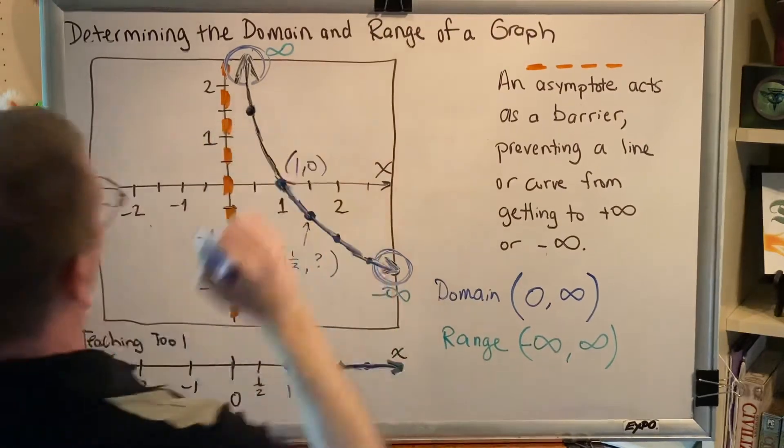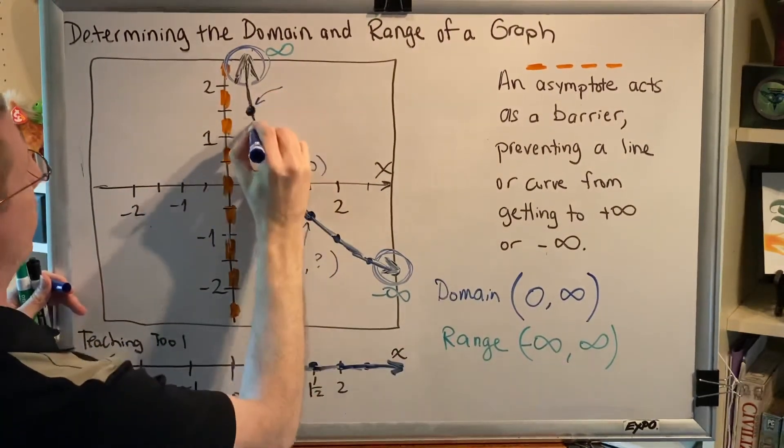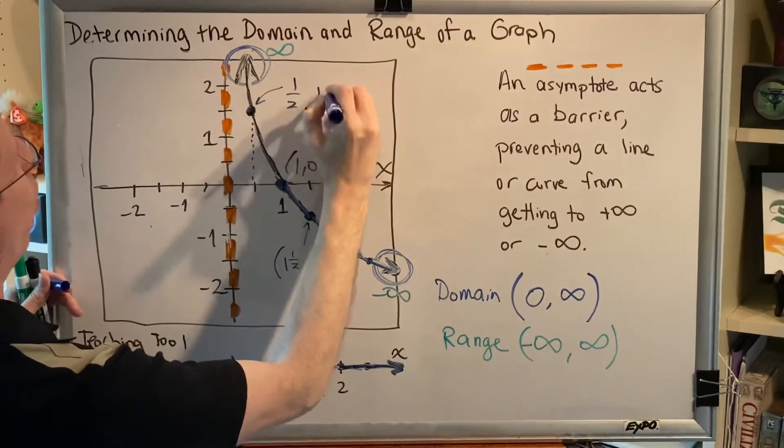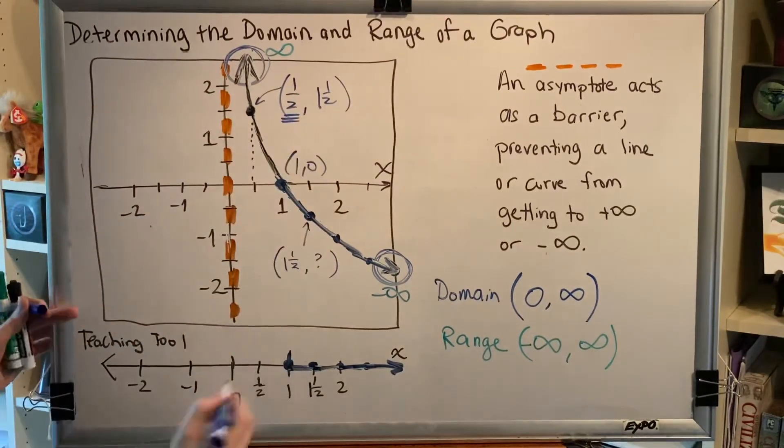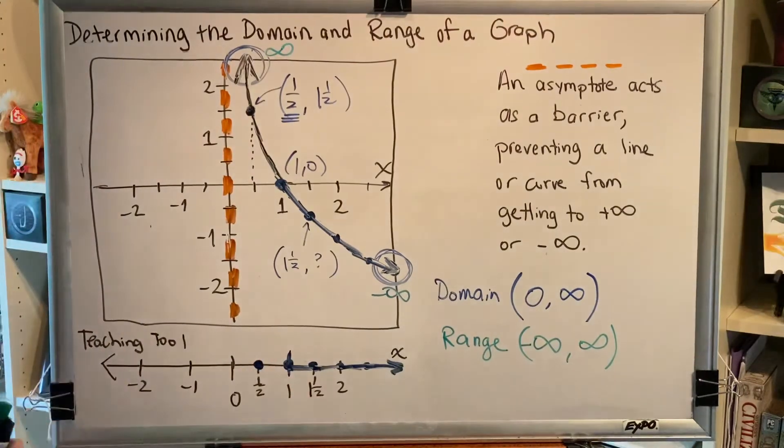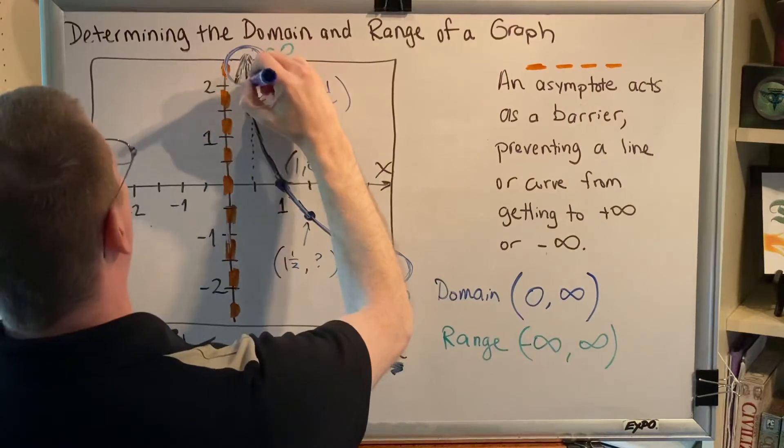So for example, this dot right here, what are its coordinates? This would be the coordinate half comma one and a half, which means the x value is half. So I have to have a dot down here on my number line for a half. And what about this dot right here?